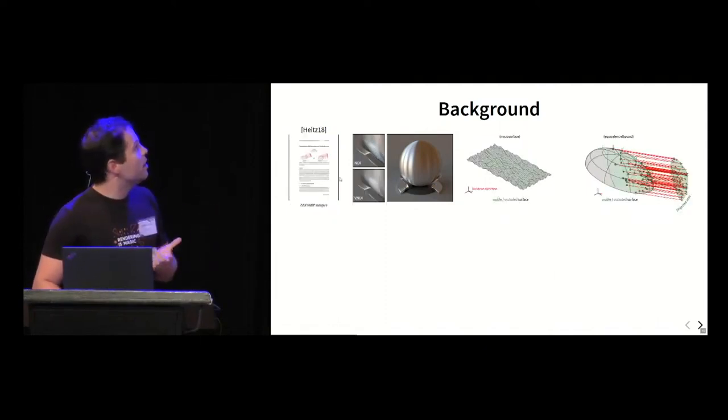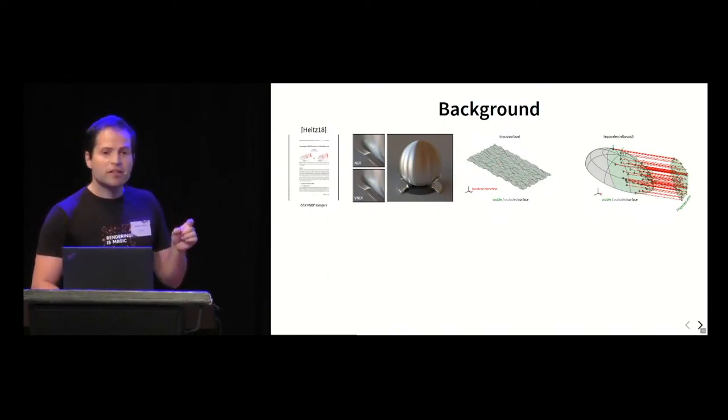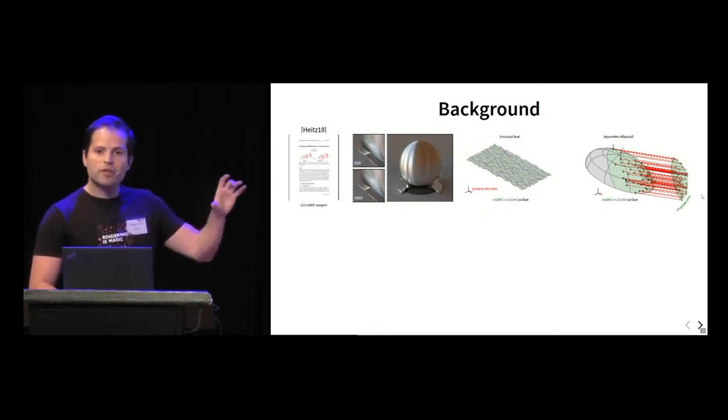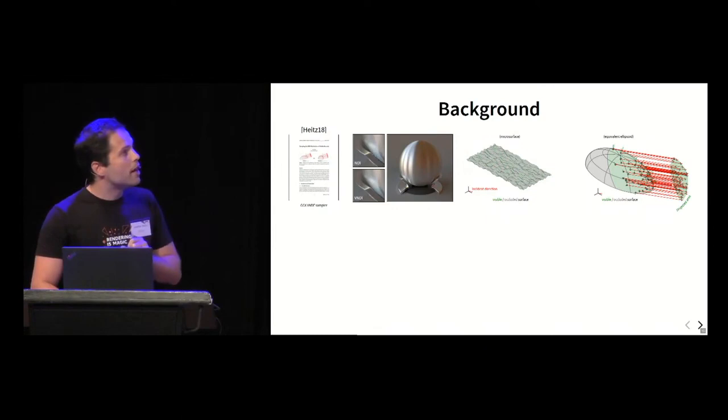This was fixed by the paper of Eric that I talked about in the introduction by introducing this VNDF sampler. Basically the idea is rather than randomly picking a green vector at the surface of the ellipsoid, you're going to pick a green vector that lies at the intersection of the projection of the ellipsoid in your incident direction and the ellipsoid. So that would be the green area. What you have to do basically is to uniformly sample this projected area.